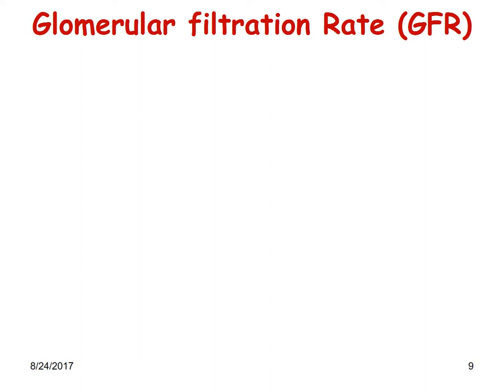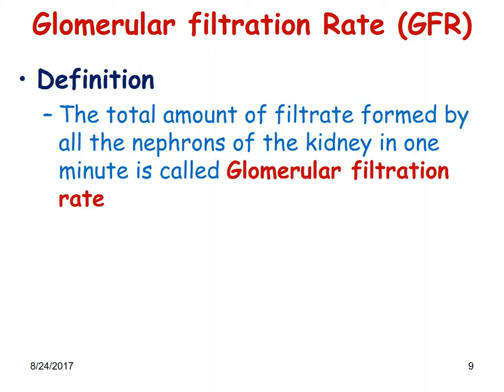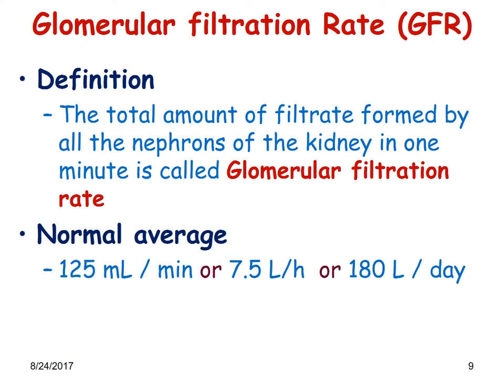Definition: the glomerular filtration rate is the total amount of filtrate formed by all the nephrons of the kidney in one minute. The normal average is around 125 milliliters per minute, or 7.5 liters per hour — if you take the whole day it is about 180 liters per day. In other words, 180 liters of plasma is filtered in the glomerulus per day.